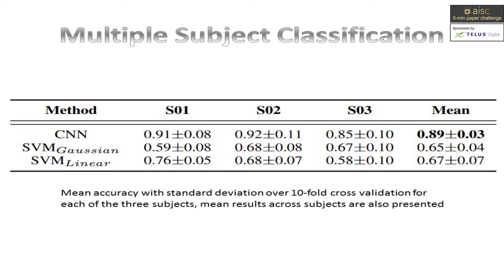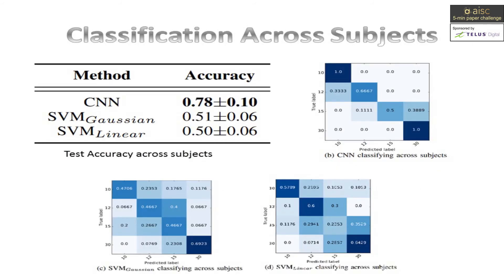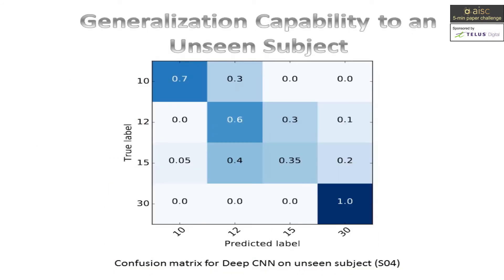The authors then classified all signals from the three subjects together, which is a challenging experiment due to biological differences between subjects and variation in the EEG recording process. However, the results show that CNN again outperforms the others. To test on unseen subjects, authors classified the data using a model trained only on the other three subjects, achieving an accuracy of only 0.59 on subject S04 without any additional training. The SVM attempt displayed random classification performance of 0.25.